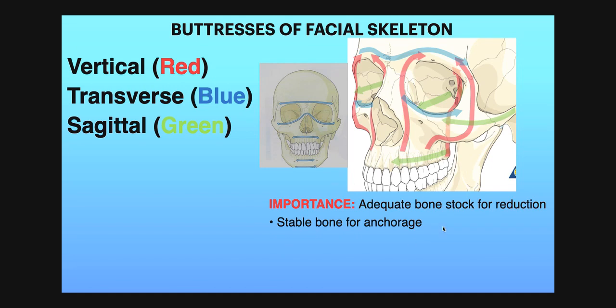What is the importance of buttresses? They provide adequate bone stock for reduction and are the stable bone for anchorage. During management and plating, the plates are placed in these buttress regions.